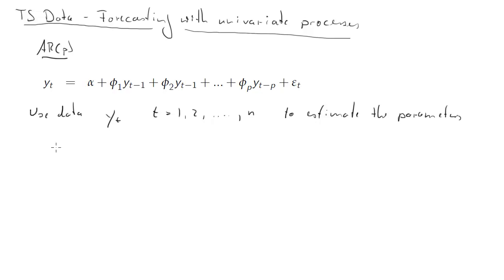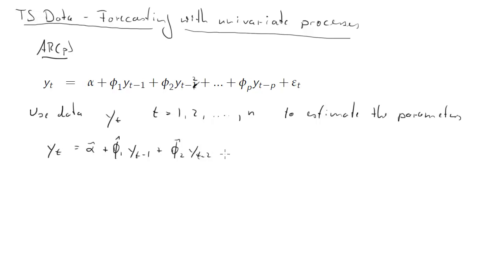Our estimated relationship is going to be: Y_t equals alpha-hat plus phi-1-hat times Y_{t-1} plus phi-2-hat times Y_{t-2} — there's a correction needed there, it should be t minus 2 — all the way to phi-p-hat times Y_{t-p} plus epsilon_t.